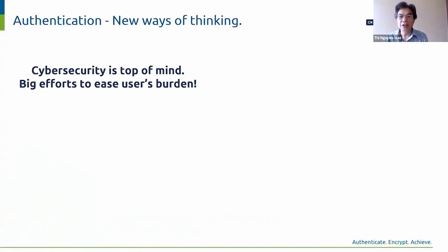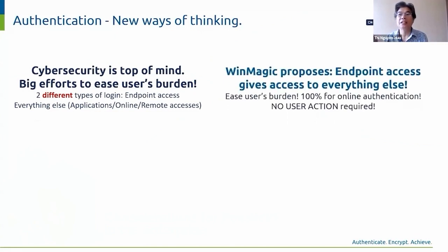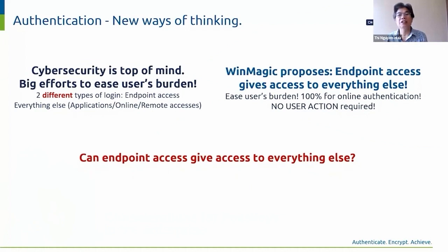Mostly the log-ins users have to make. We distinguish between two types of log-ins: endpoint access and access to everything else, because we propose that endpoint access gives access to everything else. It means users' burden for everything else — 100% of all online authentication — will be eliminated. No user action is required for them. Wouldn't this solve the burden problem beyond every expectation? So the question is: can endpoint access give access to everything else securely with no user action?